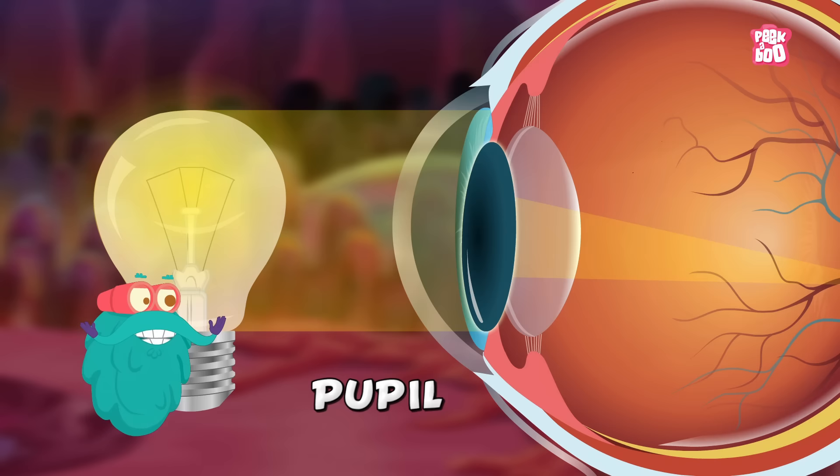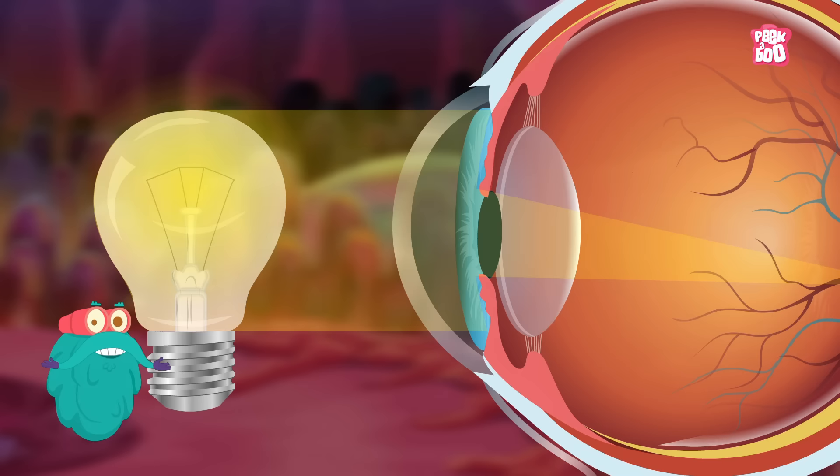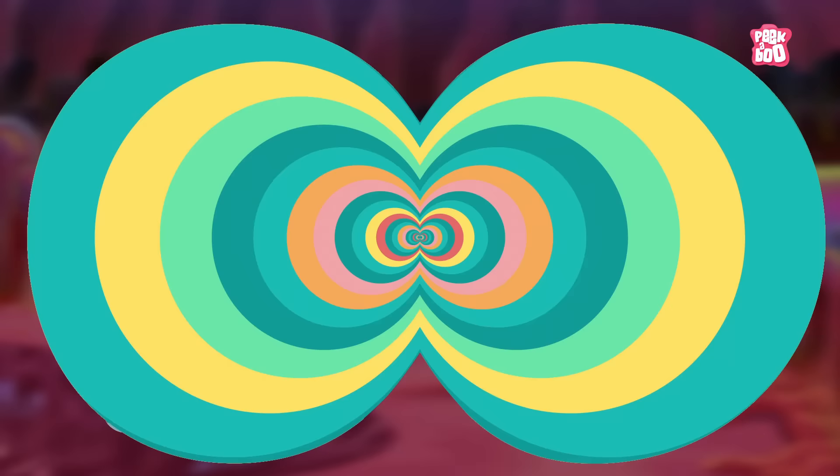Which appears as a black hole at the center of the iris. It is the opening through which light enters the eye. Depending on the amount of light, the iris stretches and contracts the pupil. Just how the aperture of a camera works.